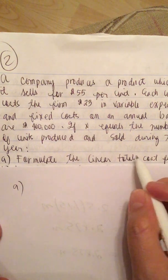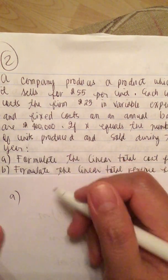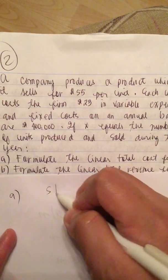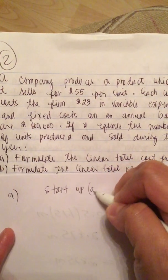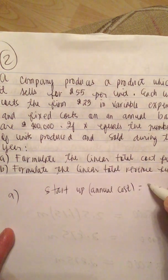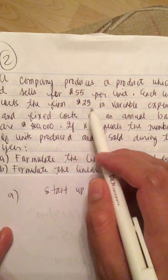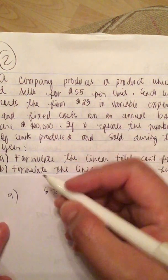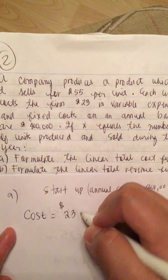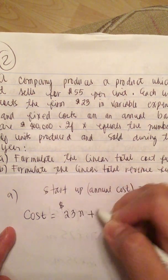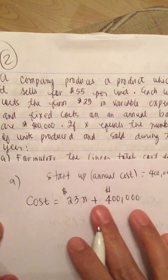So the cost—the startup cost is equal to $400,000. So annual cost equals $400,000, and then it costs the firm $23 per unit. So this is cost equals $23 times the number of units that they make, so N, plus their annual cost which is $400,000. So this is cost.